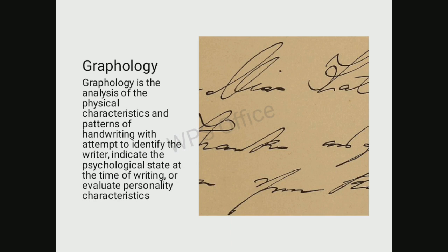That is why criminals with knowledge of this will not use their own handwriting when committing crimes. For example, in a kidnapping for ransom case, you would not use your own handwriting for a demand letter because handwriting is already evidence that can be used against you. Most criminals who know about this use machine-produced writing such as typing, typewriters, and printed materials.